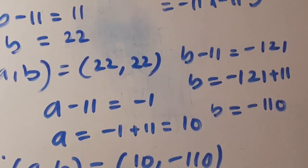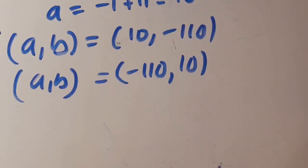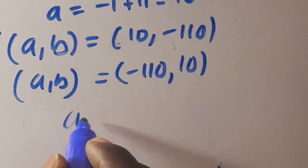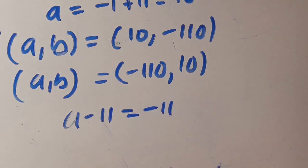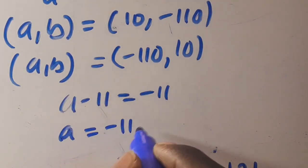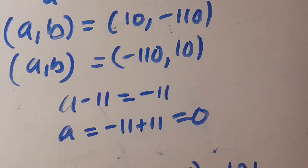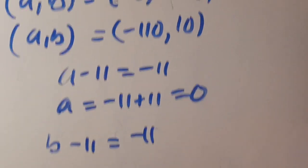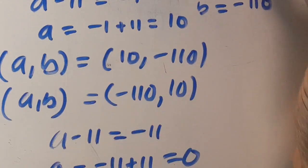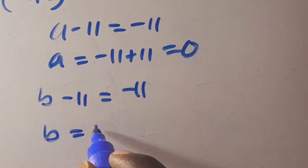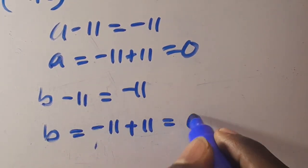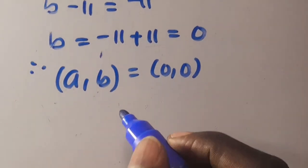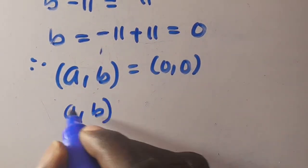For the last factor pair: a - 11 = -11 gives a = 0, and b - 11 = -11 gives b = 0. So (a, b) = (0, 0).